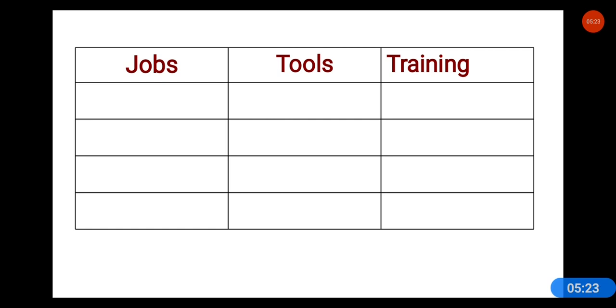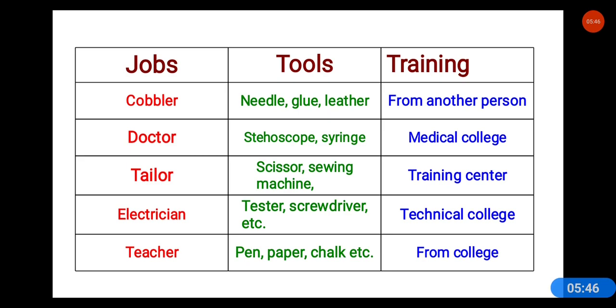You can make a pair or work alone. Open your books to page number 40. There are a few jobs given there — such as cobbler, doctor, and tailor. Write down those jobs, the tools used in those jobs, and where the people get trained.